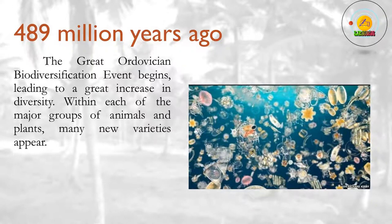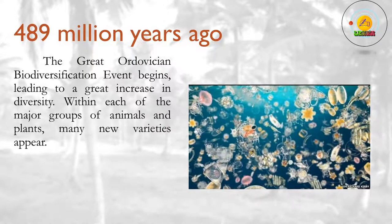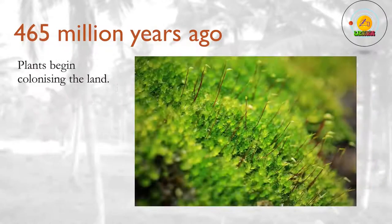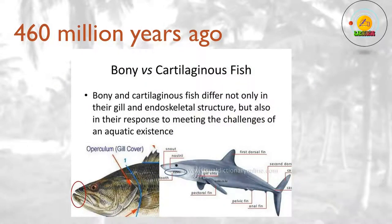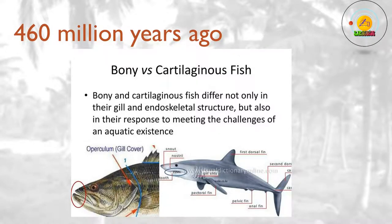489 million years ago? The Great Ordovician Biodiversification event begins, leading to a great increase in diversity — within each of the major groups of animals and plants, many new varieties appear. 465 million years ago? Plants begin colonizing the land. 460 million years ago? Fish split into two major groups: the bony fish and cartilaginous fish. The cartilaginous fish have skeletons made of cartilage rather than bone, and eventually include all the sharks, skates and rays.